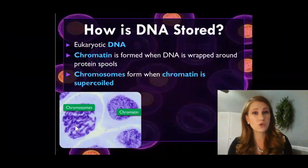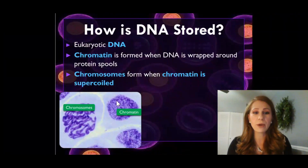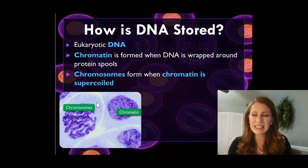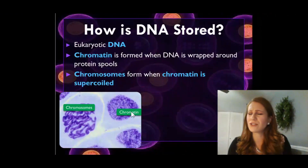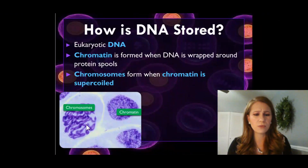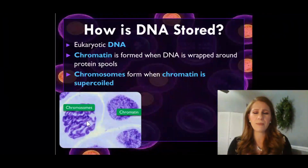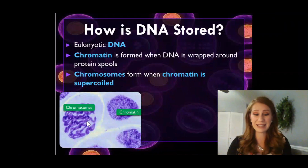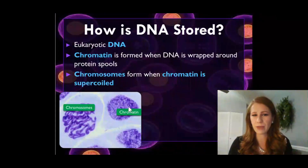If we look at an actual picture under a microscope, we can see that chromatin just looks kind of like a mess — it's hard to tell where something starts and ends. But if you look at chromosomes, they look more like worms; they're coiled more tightly and you can see their distinct shape.